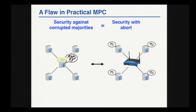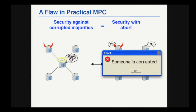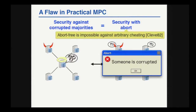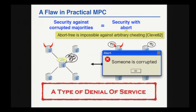There, we want the so-called security with abort. As before, we want the protocol to implement its specification, the dream world, even when some parties misbehave. But when we want protocols to tolerate dishonest majorities, we allow the protocol to abort. The best case scenario of aborting is that everyone hears about it. Although we know from classical impossibility results that we cannot have abort-free protocols against dishonest majorities, this situation is very nasty, because it introduces a trivial type of denial of service. The adversary can, just by corrupting a single party, stop the computation and make us not be able to compute anything.